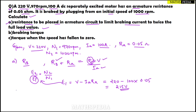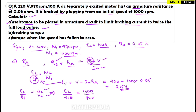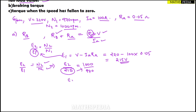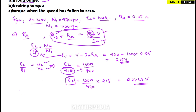Now using the speed-EMF ratio: E2 / E1 = N2 / N1. So E2 / 215 = 1000 / 970. Therefore E2 = (1000 / 970) × 215 = 221.65 volts. Now substituting into the resistance formula: Rb + Ra = (E2 + V) / Ia, giving Rb + 0.05 = (221.65 + 220) / Ia.